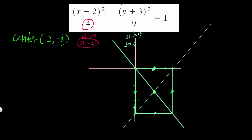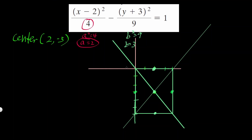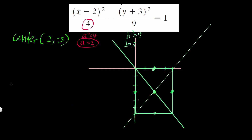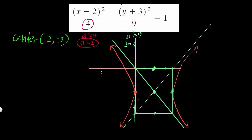The graph has to open right and left because x is positive — you can see there's a negative in front of y. So whatever is positive: if x is positive, it opens left and right; if y is positive, it opens up and down. Just follow the asymptote and make it curvy — don't make it pointy. That's how you graph a hyperbola.